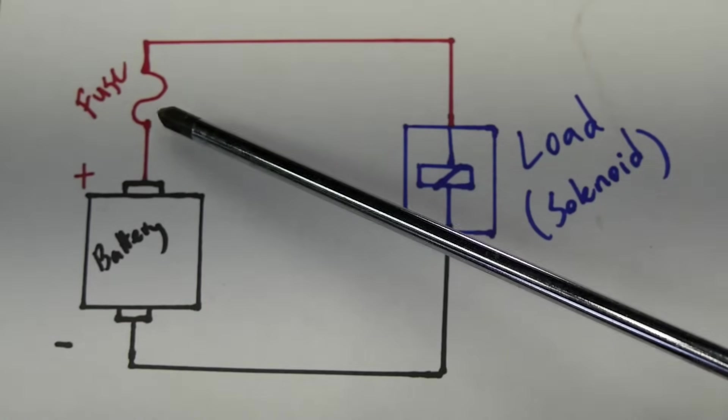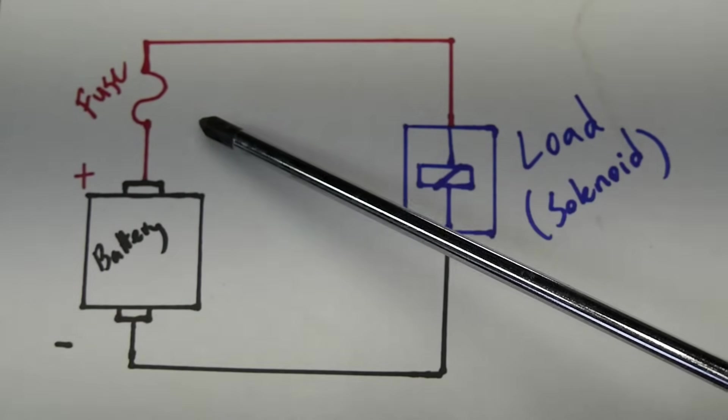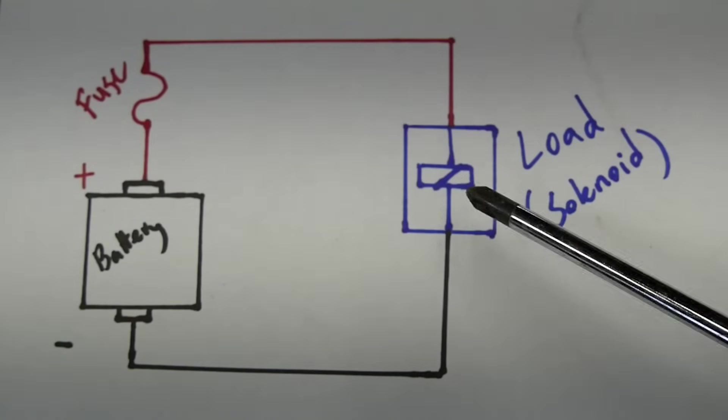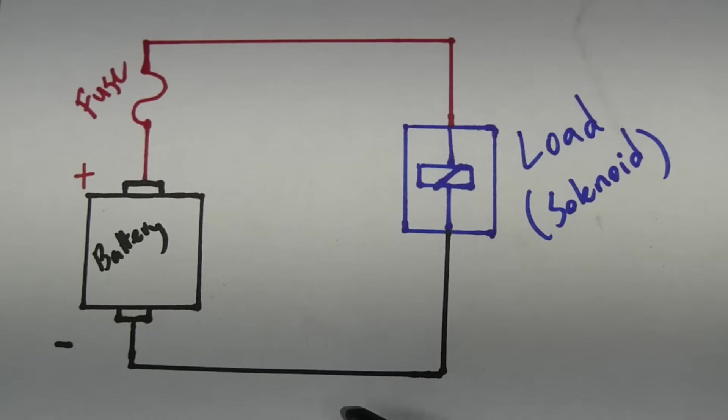On the positive side, right after the battery, you're usually going to have a fuse. This is going to limit the amount of current that can flow through the circuit, protecting the wires and the components or the loads that are going to be on the circuit.